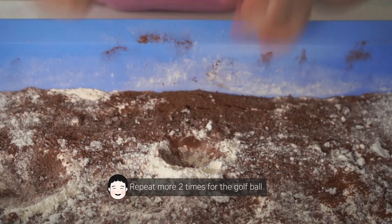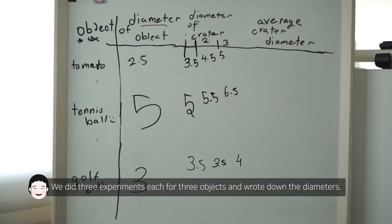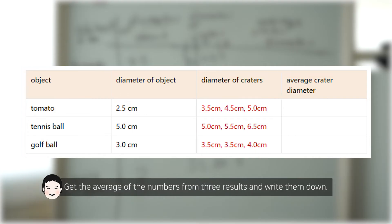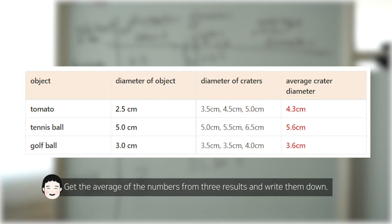Repeat two more times for the golf ball. Read the three experiments for each of the three objects and write down the diameters. Get the average of the numbers from the three results and write them down.